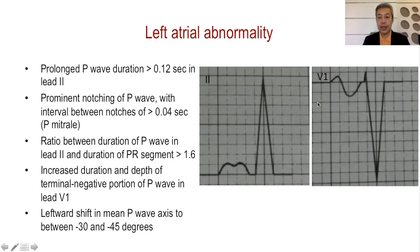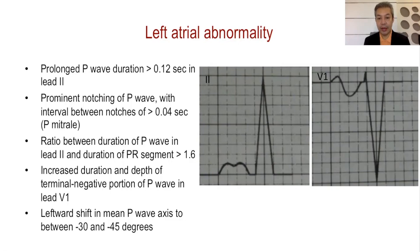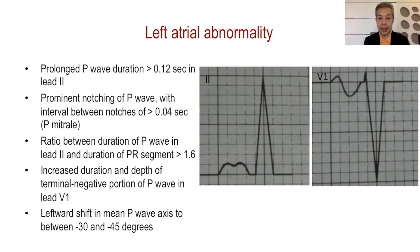I would recommend lead 2 and V1 because these are the leads closest to the left and right atria. For left atrial abnormality, this is how the P waves would look: there's a prolonged P wave duration of more than 0.12 seconds, prominent notching of the P wave that looks like an M, and the peaks of the two notches are separated by greater than 0.04 seconds or one small square. The ratio between the P wave and the PR interval is more than 1.6, which we call the MACRU index — another finding in patients with left atrial abnormality.